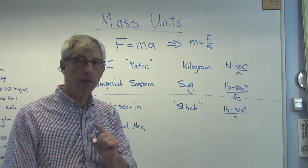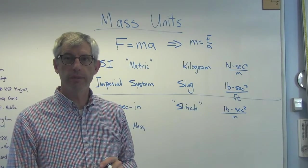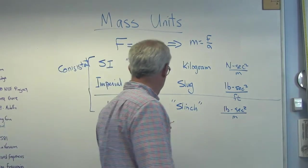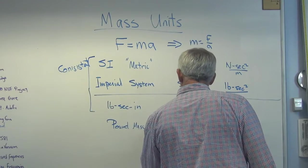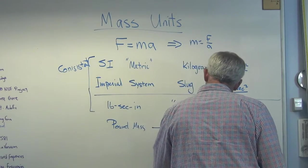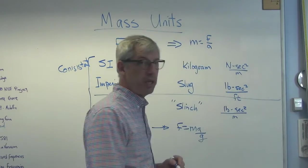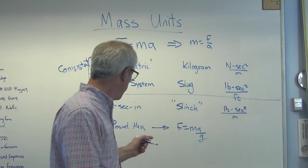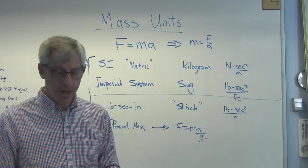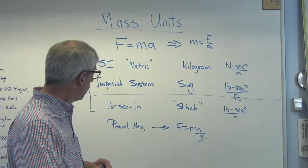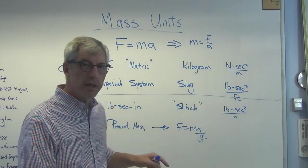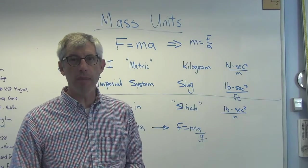In this, F doesn't equal MA anymore. Oh, yay. In this, you have to divide A by G. Now, if you're willing to do that, you can get this to work. But really? You want to work in a system where F doesn't equal MA anymore?